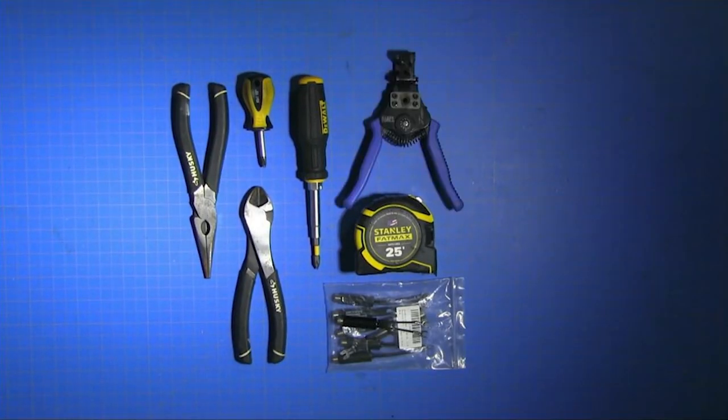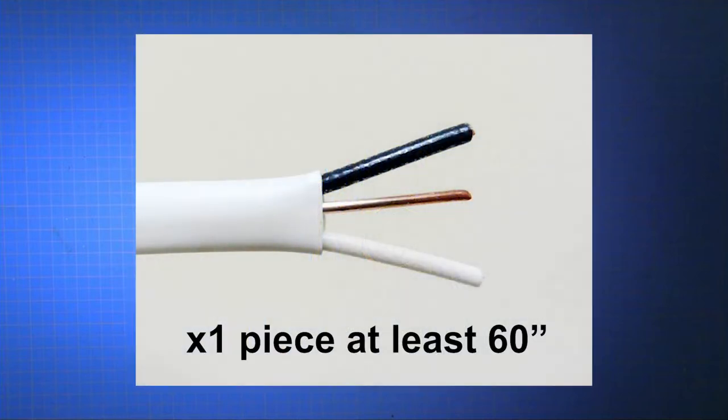The original plans call for coat hangers for the wires, but I'm using 14-gauge Romex wire. You're going to need at least 60 inches, one piece of Romex. That will give you three copper wires at 60-inch length.